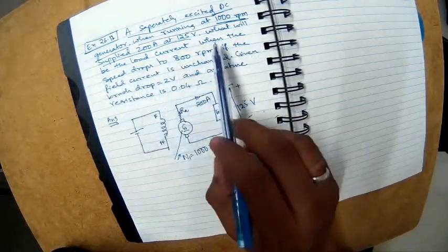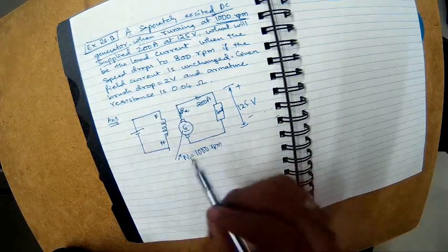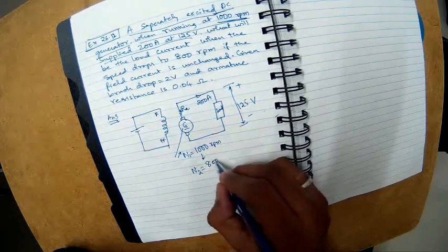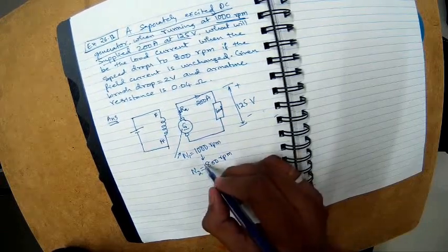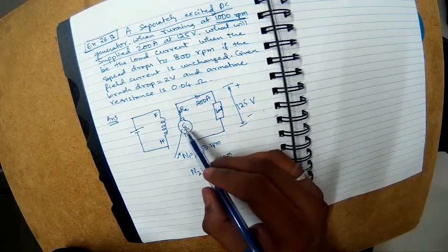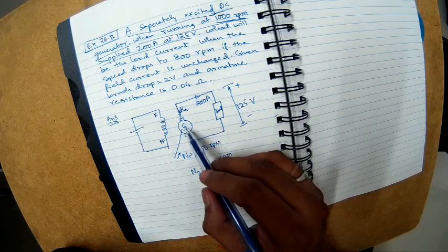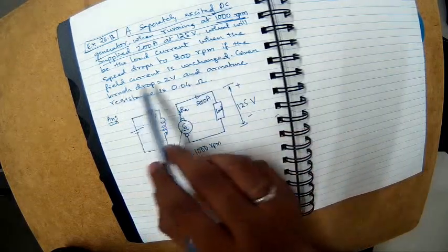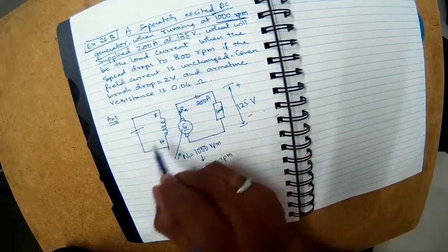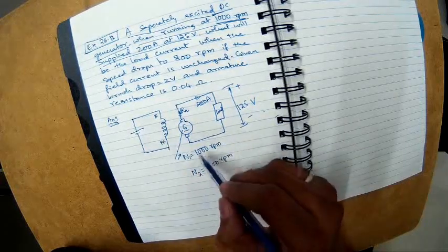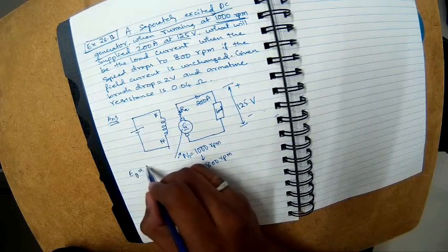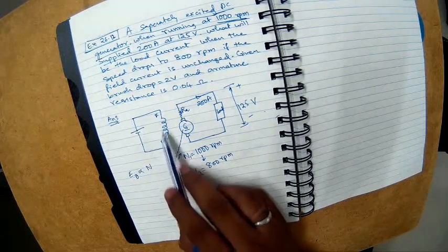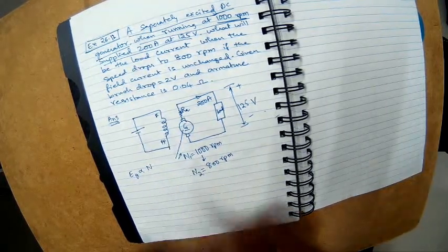The question is: what will be the load current when the speed drops to 800 RPM? Due to some reason N1 is dropping to N2 at 800 RPM. When the speed reduces, you will naturally expect that the EMF induced will reduce and therefore the voltage output might also reduce. If the field current is unchanged, I can simply write that EMF generated is proportional to speed. Otherwise EMF generated is proportional to the product of flux and speed, but since the field current is unchanged this simplified relation holds.